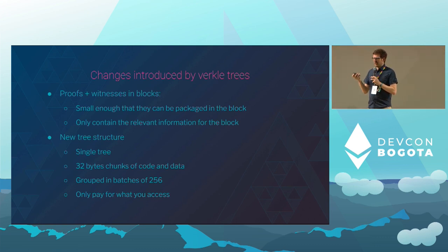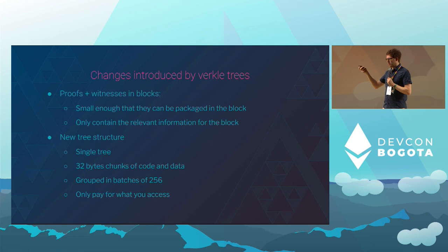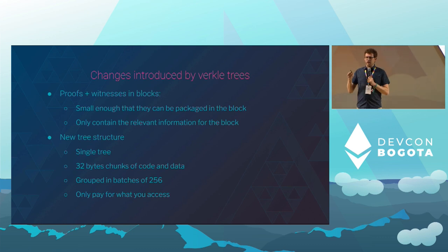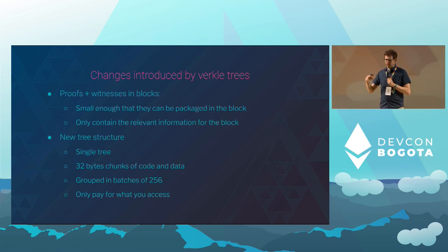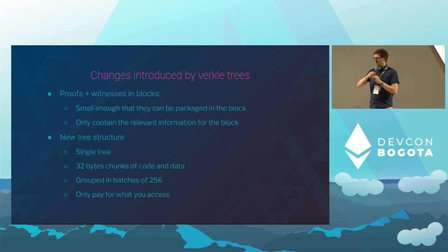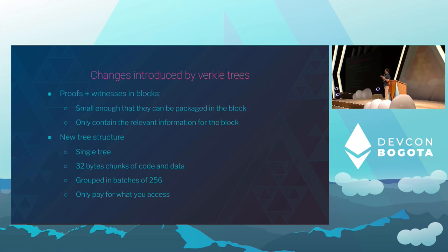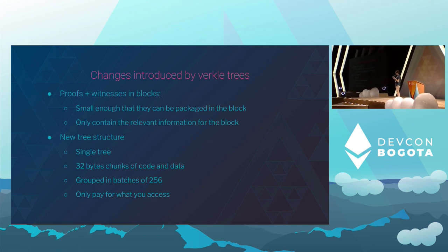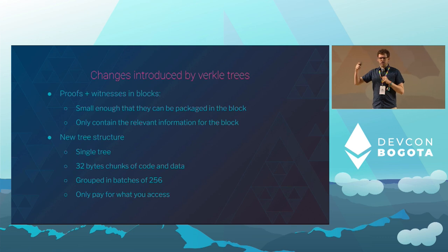Each item — like each account item, for example the balance, the nonce, the code, any storage slot — is accessed independently, because we don't want to add more to the proof than is required. If I'm sending funds to a new address, I just need the target address's balance. I don't need to know how much code they have. The data is spread all over the tree, but we try to group things that belong together so you don't spend time jumping all over the tree. It's grouped in batches of 256.